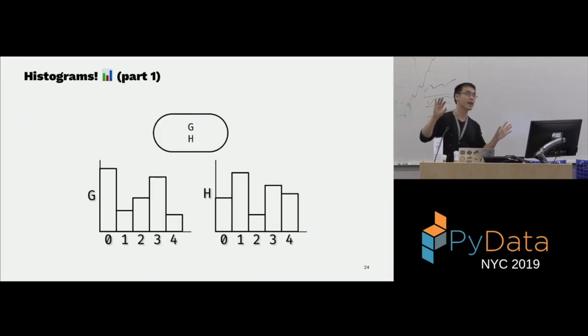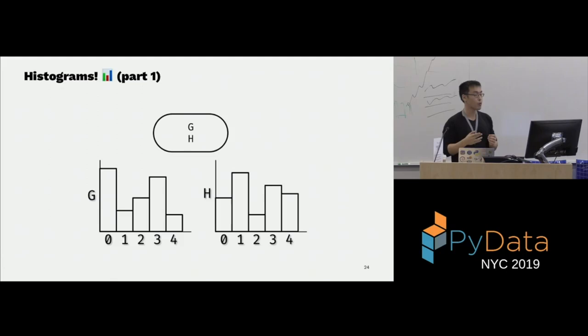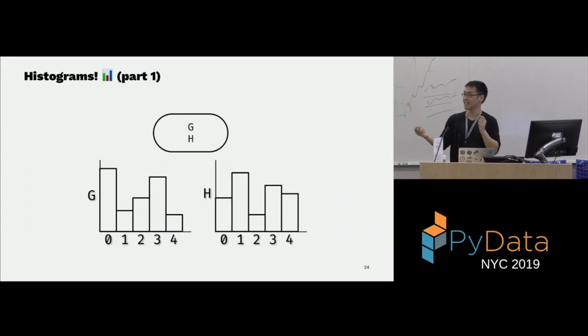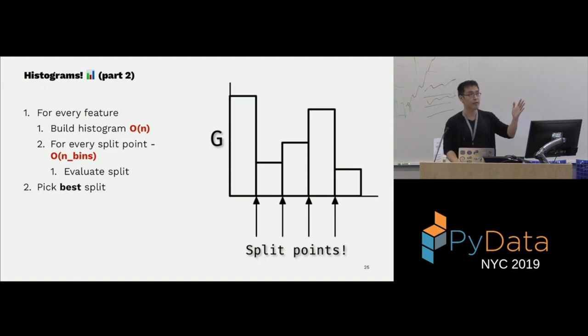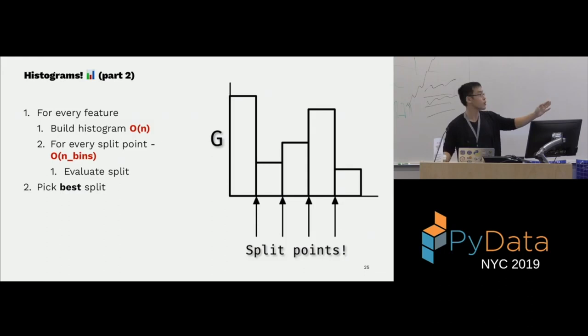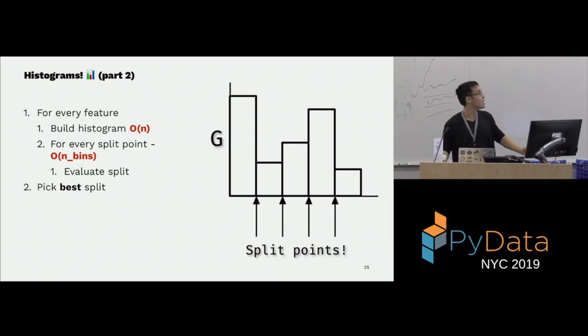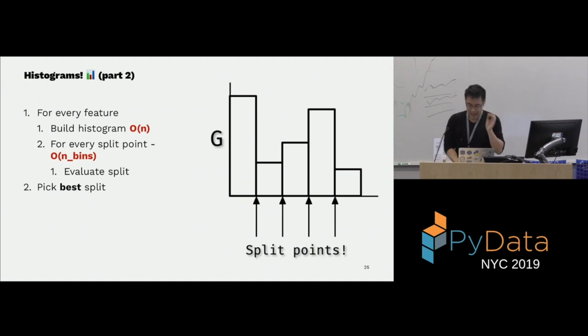Now that we've binned our data, each sample has its own corresponding gradient. You can build histograms of gradients and Hessians. For a given node, samples fall into bins, and you sum the gradients of every sample in a given bin — the Y-axis of the histogram is the sum of gradients. Building histograms means scanning through all your samples and summing things up. Split points are now finite — just the thresholds between bins — and you don't have to sort features anymore, because everything in bin one is less than everything in bin two.